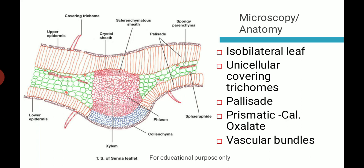Now we come to the microscopic features of Senna. It starts from the upper epidermis, and similarly there is a lower epidermis. The leaf is called isobilateral leaf because we can divide it into two equal parts. Below the upper epidermis you see polygonal cells. There are unicellular covering trichomes on both upper and lower epidermis. Below that you can observe the palisade layer — elongated tubular cells seen continuously in the upper epidermal region.